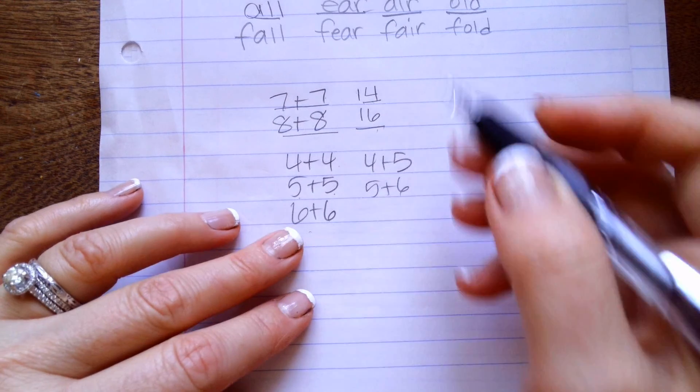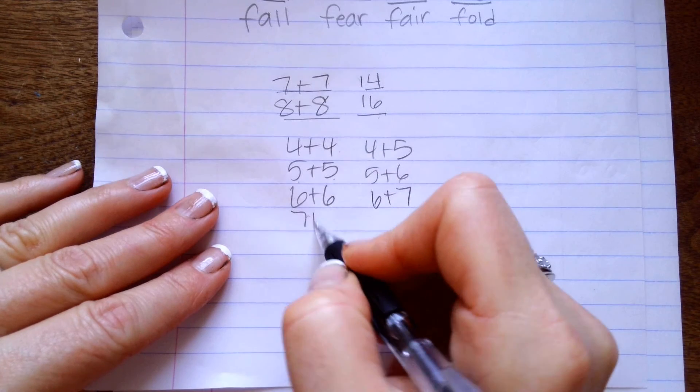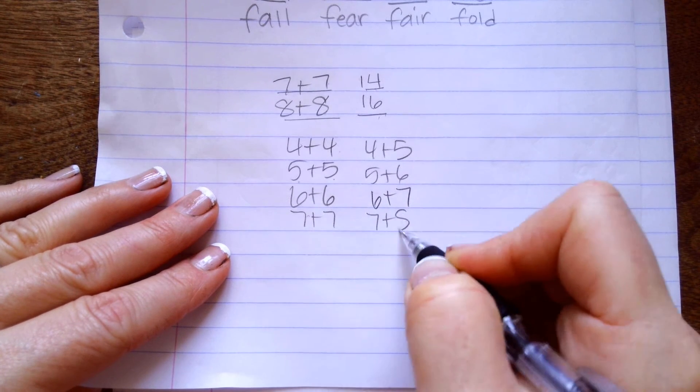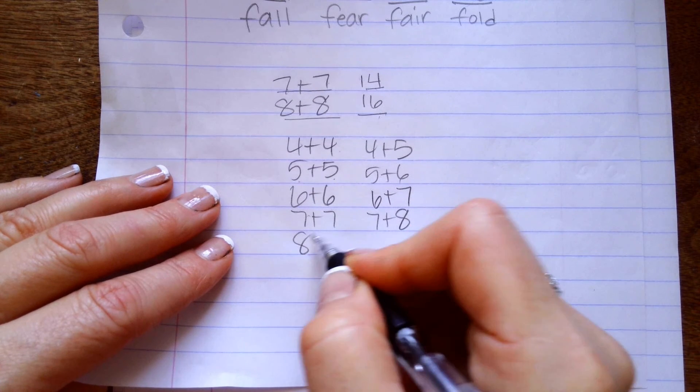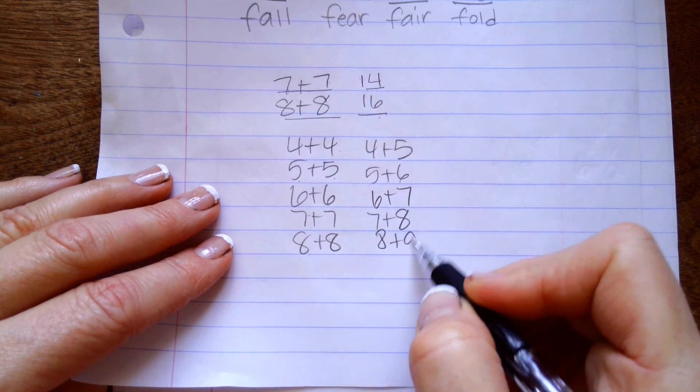14. Okay. 6 plus 6 is 12. So 6 plus 7 is 13. 7 plus 7 is 14. So 7 plus 8 is 15. And 8 plus 8 is 16. So 8 plus 9 is 17.